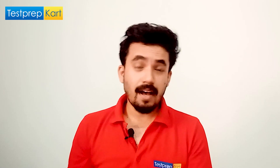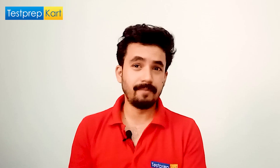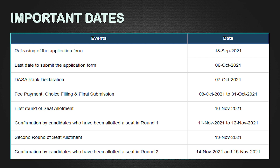Now let's discuss the important dates for the DESA counseling process 2021. The release of the application form has already started from September 18th, and the last date to fill the application form is October 6th — the entire process is online. After that, the DESA ranking will be declared on October 7th, just one day after the final submission deadline.